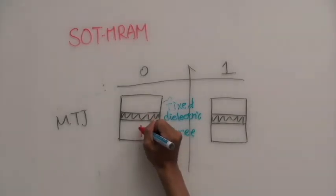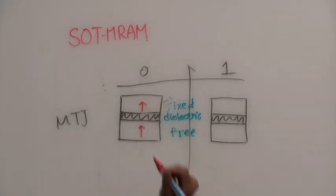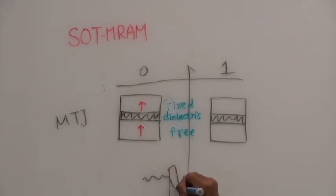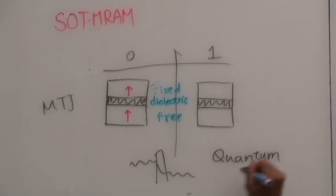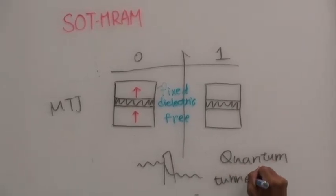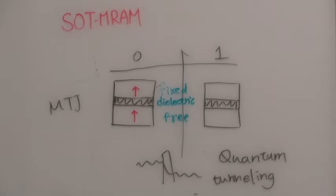When the magnetization of the free layer and the fixed layer are in the same direction, there are more numbers of polarized electrons that can tunnel through the dielectric barrier. The tunneling of electrons is a kind of quantum effect.